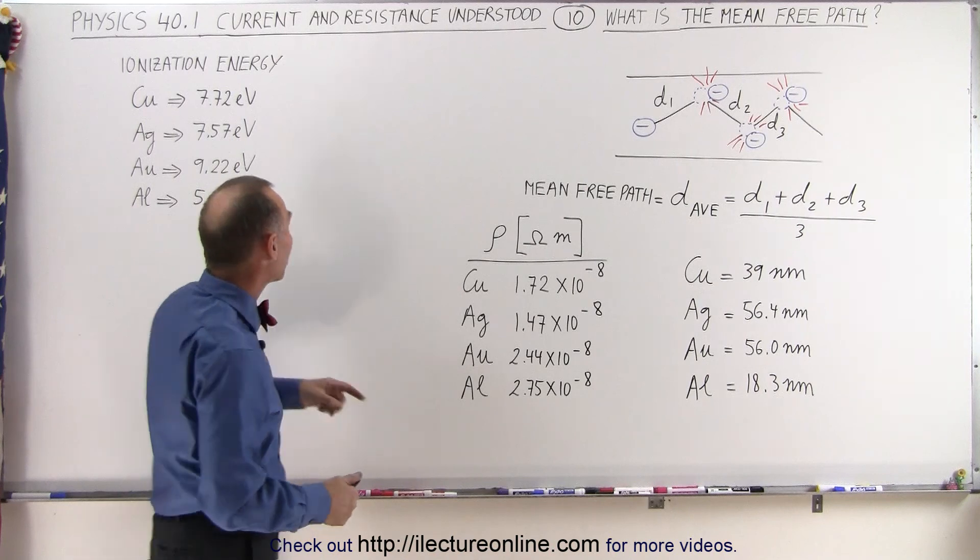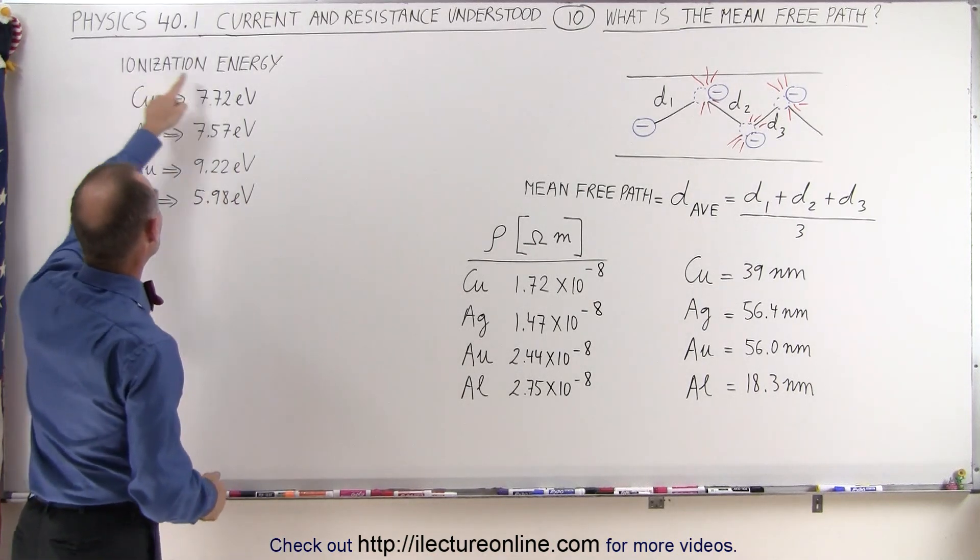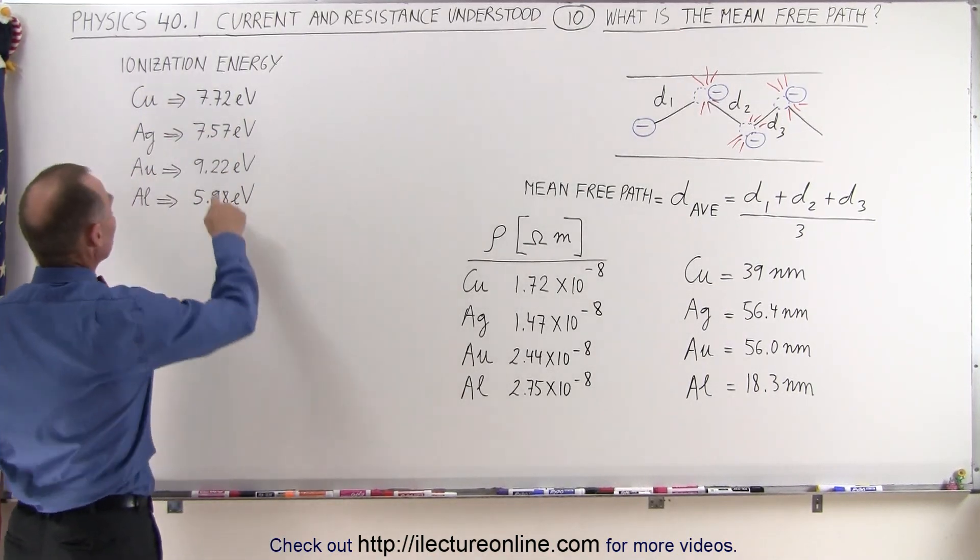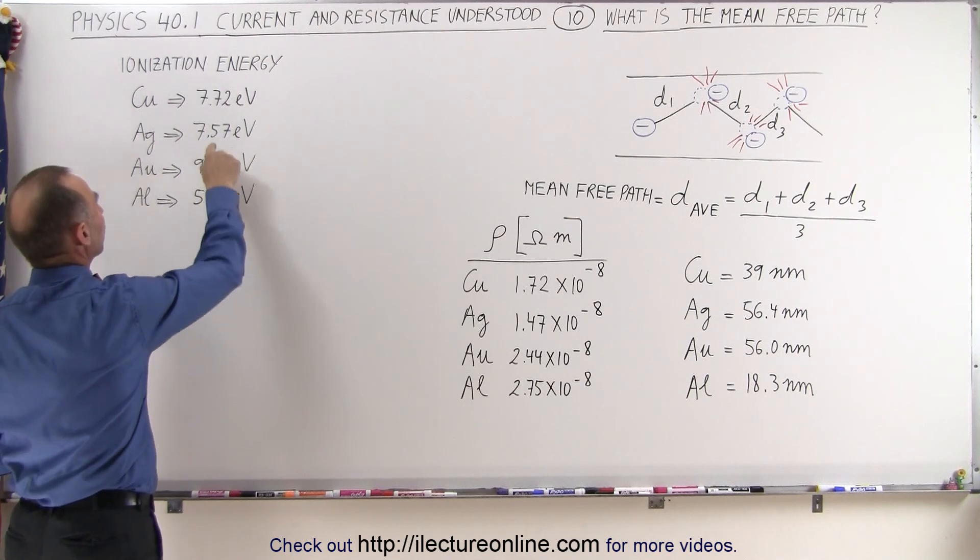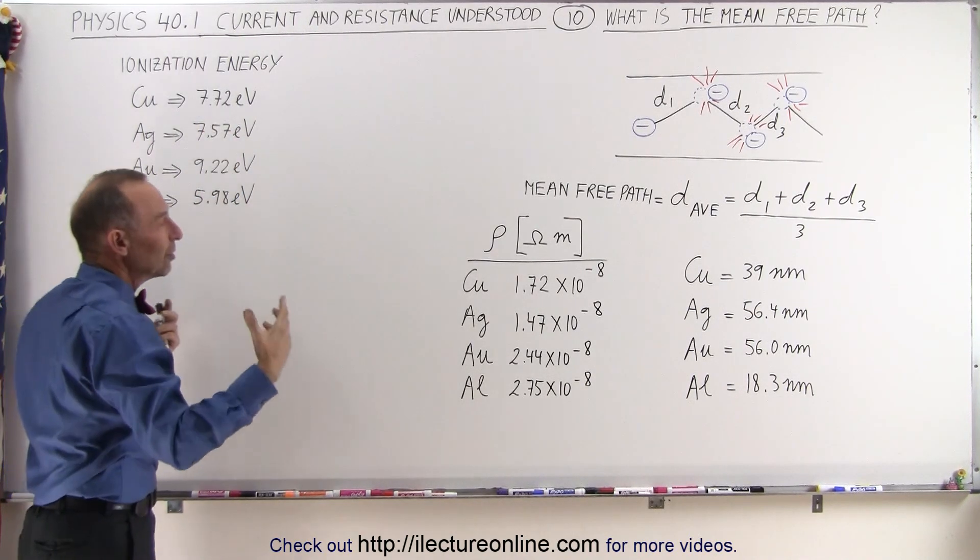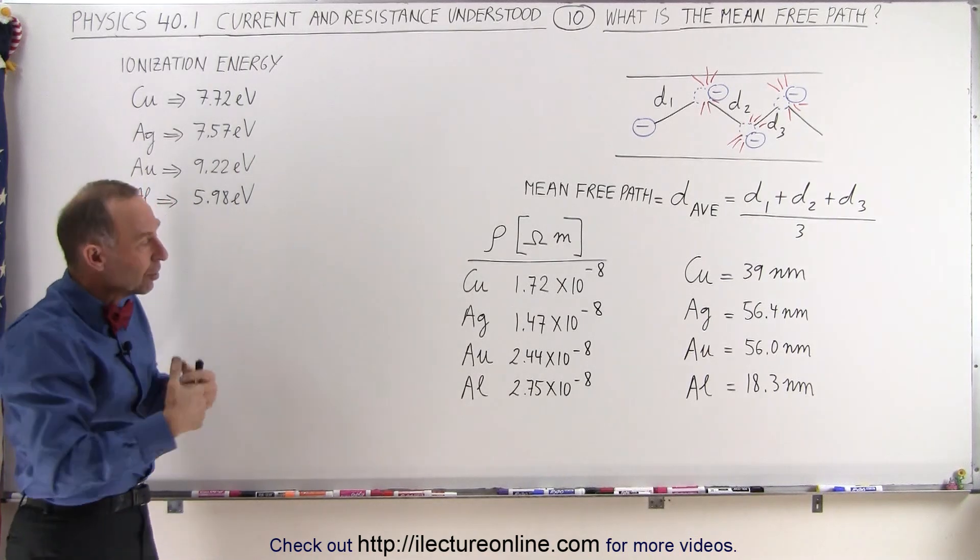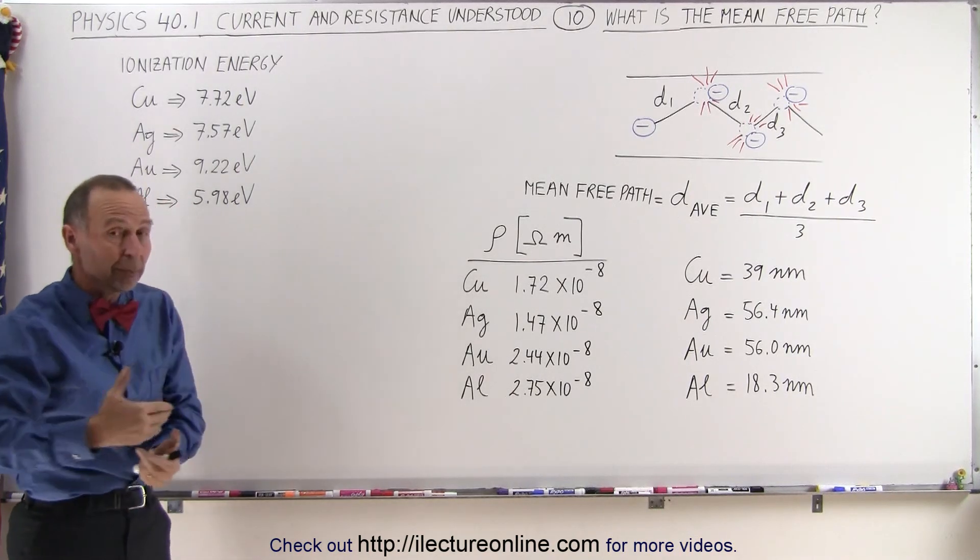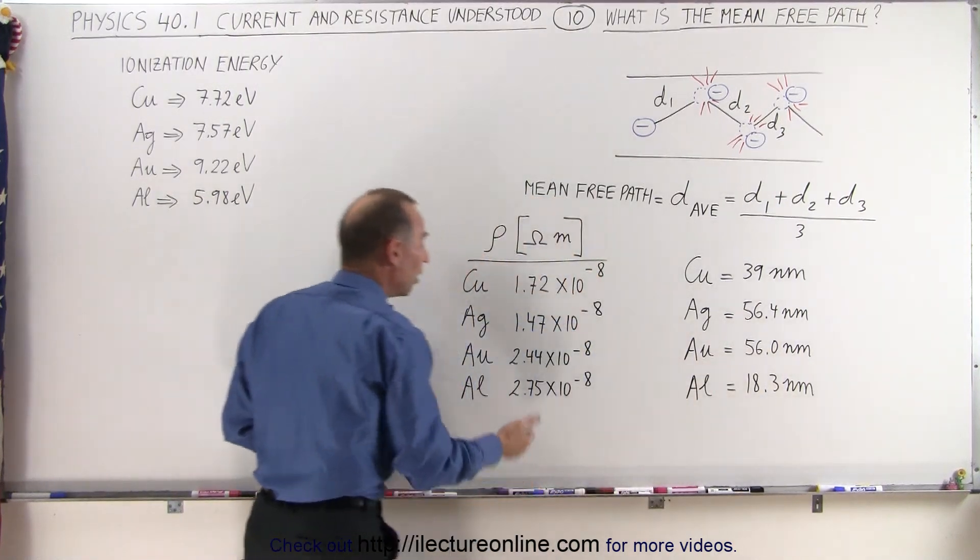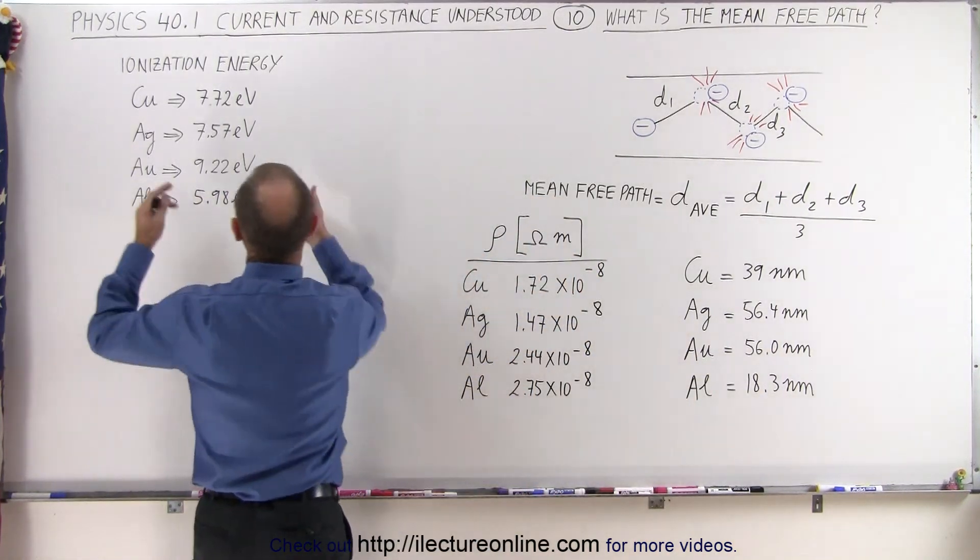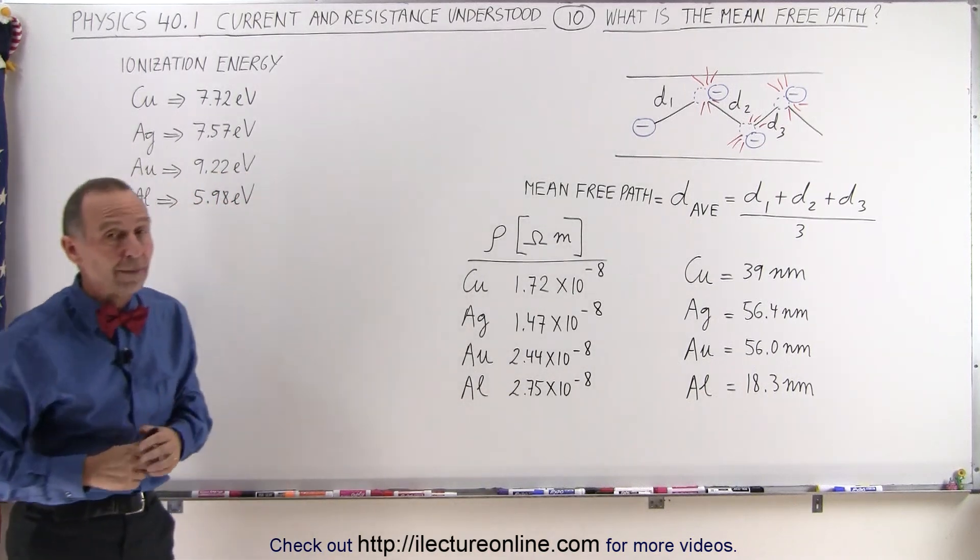The reason for that is when you go back up here and you look at ionization energies, notice that it takes a lot more energy to free that last electron for gold as it does for silver or copper. So when you take those two concepts together you can see why gold would still be a good conductor because of the large path between collisions, but not as good as it could be because it takes more energy to remove that last electron.